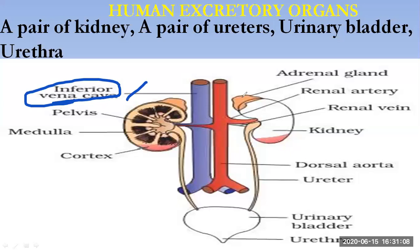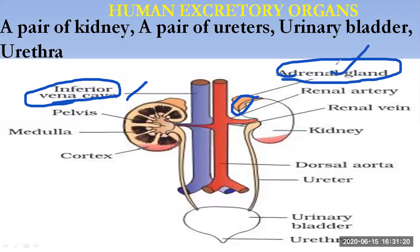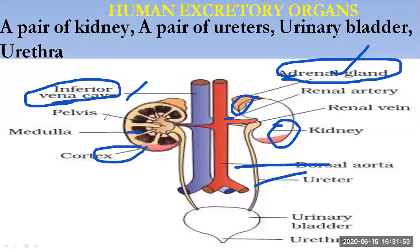Above the surface of the kidney there is a small dome-shaped structure known as the adrenal gland, which is involved in the secretion of different hormones. The renal artery carries pure blood and provides blood to the kidney. The renal vein carries impure blood away from the kidney. The kidney is also divided into two regions: the outer region called the cortex and the inner region called the medulla, and there is also the pelvis region.